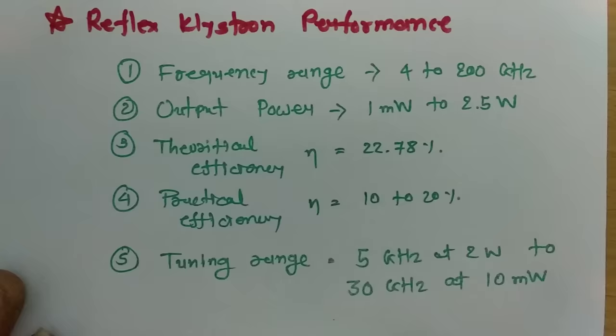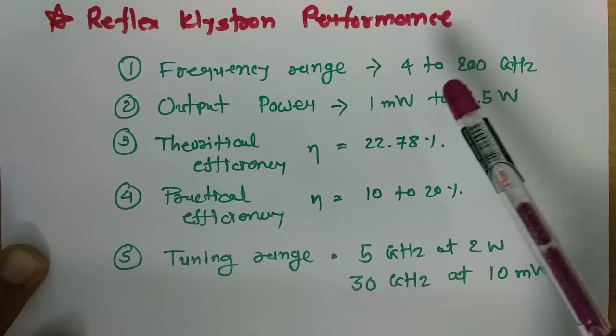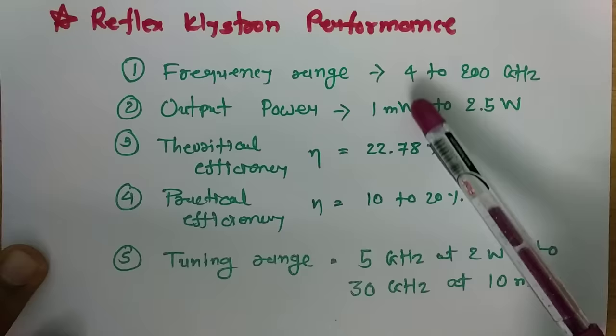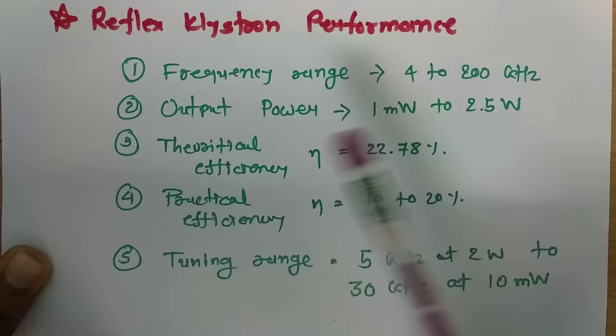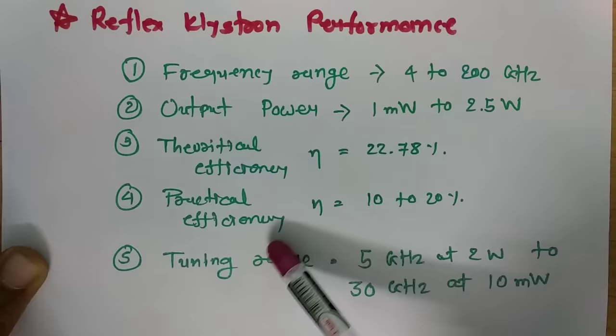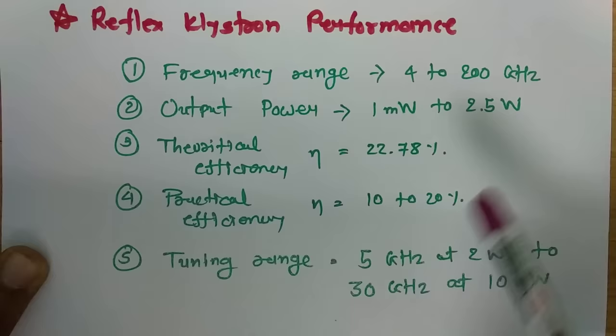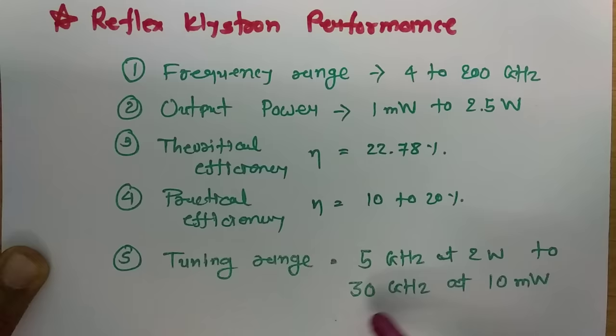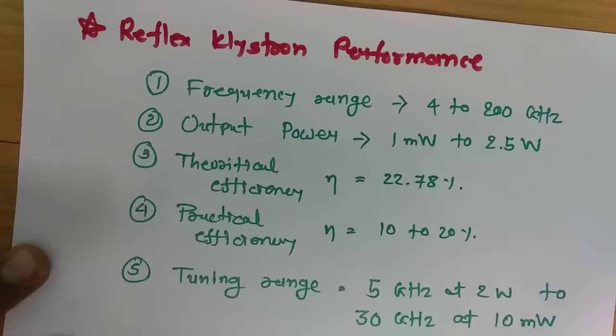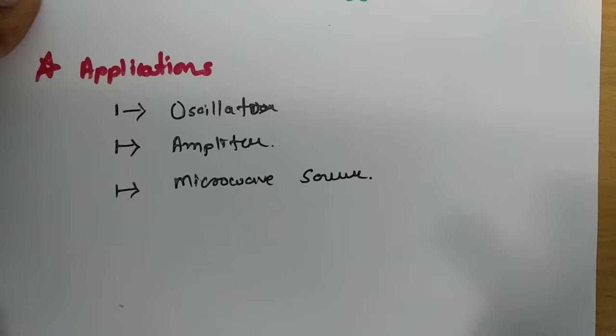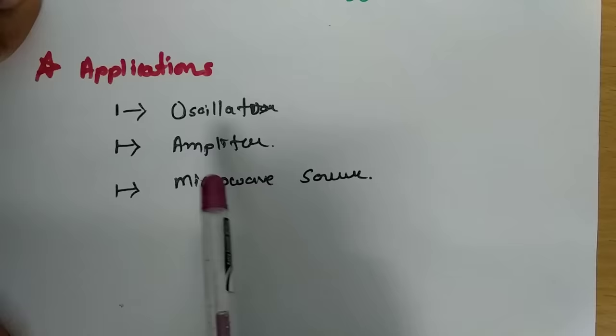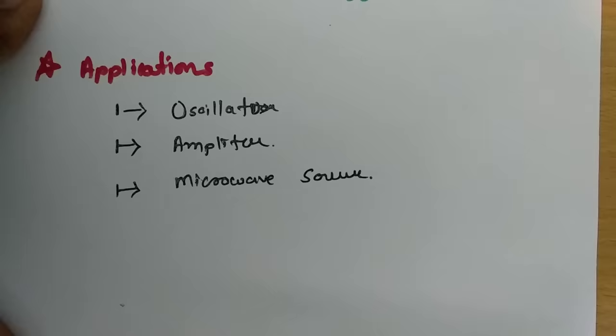The performance parameters of the reflex klystron are as follows: frequency range is from 4 GHz to 200 GHz; output power varies from 1 milliwatt to 2.5 watts; theoretical efficiency is 22.78%; practical efficiency varies between 10 to 20%. Some reflex klystrons have a tuning range starting from 5 GHz at 2 watts power and 30 GHz at 10 milliwatt power.